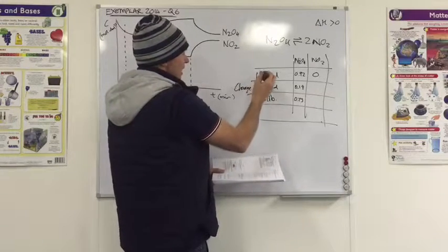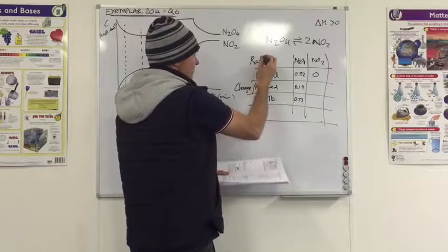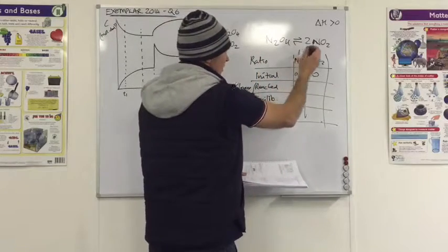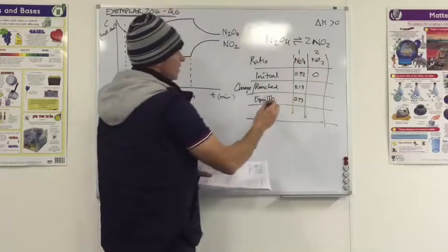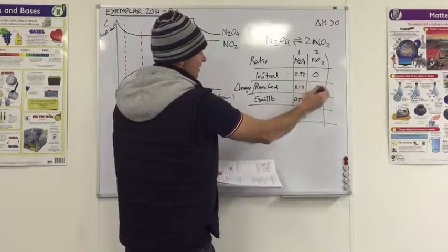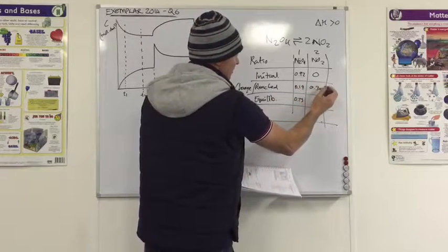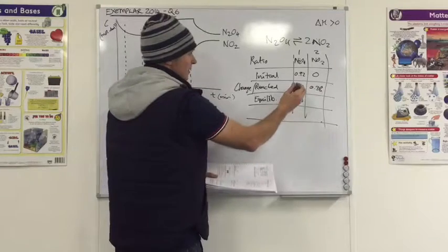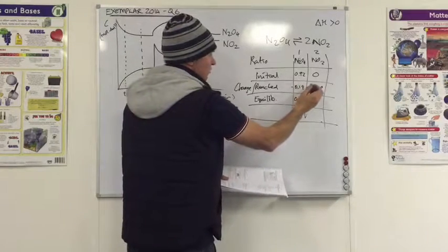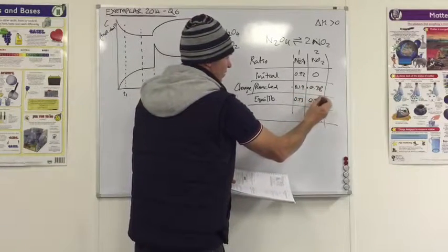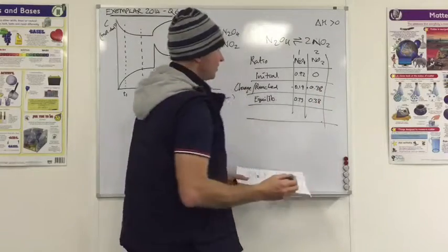How much changed? Go back to the ratio line. It's a 1 to 2 ratio. So therefore, 0.19 must be multiplied by 2, 0.38. That was being used. That was being formed. So therefore, we end up with 0.38 of the NO2. I hope that made sense.